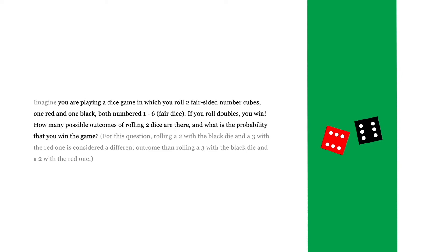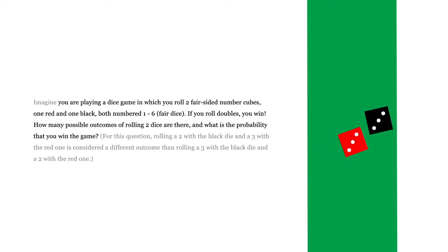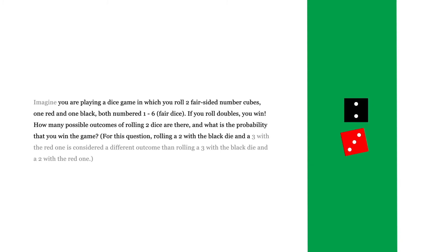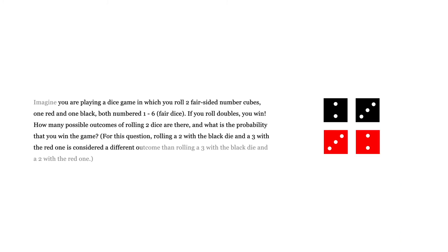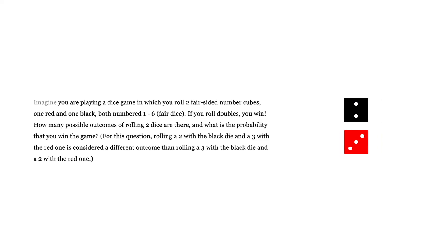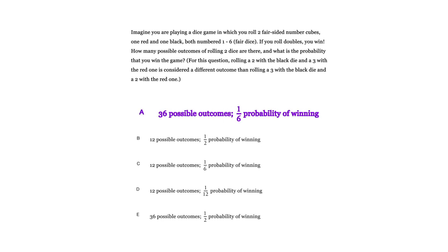Sometimes it doesn't matter if you roll a two with one die and a three with the other, or a three with one die and a two with the other. But in this case, because one's red and one's black, rolling a two with the black die and a three with the red one is considered a different outcome than rolling a three with the black one and a two with the red one. So the answer is: there are 36 possible outcomes, and you have a one-sixth probability of winning.